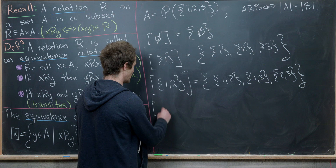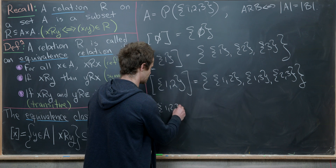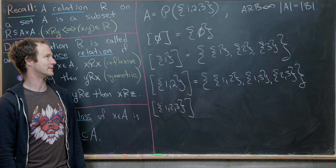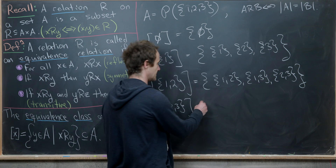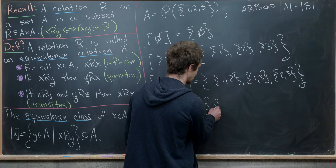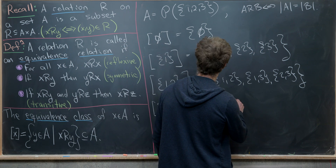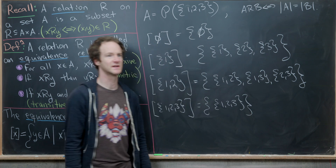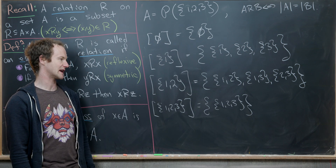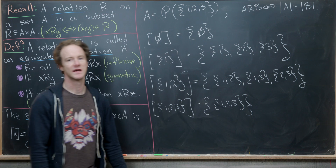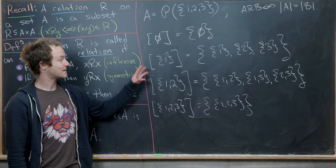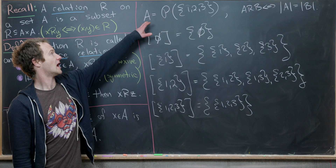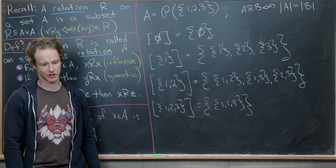Finally, the equivalence class of the full set {1, 2, 3} contains only one element: the set {1, 2, 3} itself, since it is the unique three-element subset. So this gives us a complete picture of the equivalence classes of A under this relation.